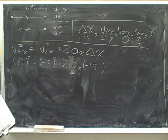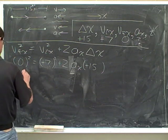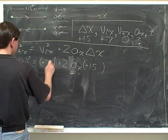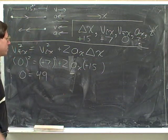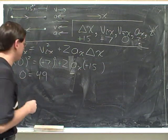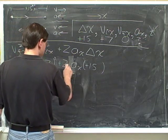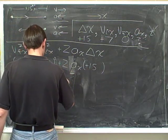Now we've plugged in and we can simplify. 0 squared is 0. 7 squared is 49. After we've plugged in, we don't have to keep writing the signs down. 2 times 15 is 30.